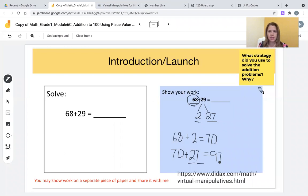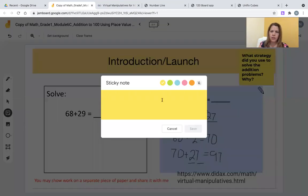Now, the question that is on this introduction page is which strategy did I use to solve the addition problem and why? Students and scholars, I'm going to click on a sticky note and answer that question. I used the break apart strategy. I broke apart the second addend into 2 and 27. So why did I select that? I wanted to make the next ten, then add.